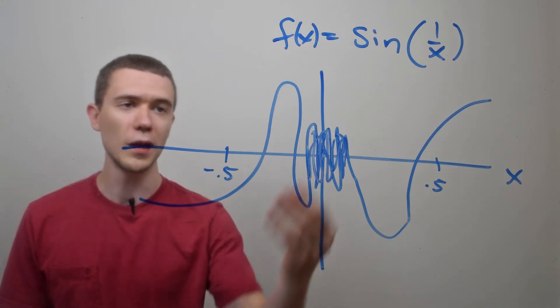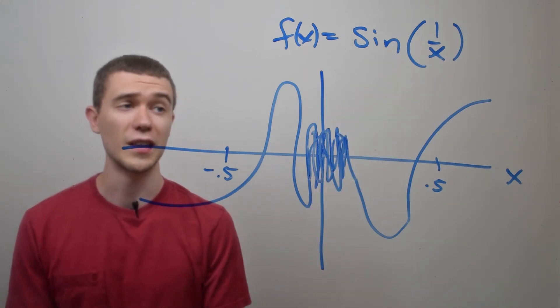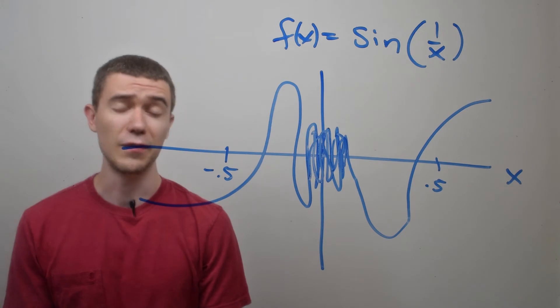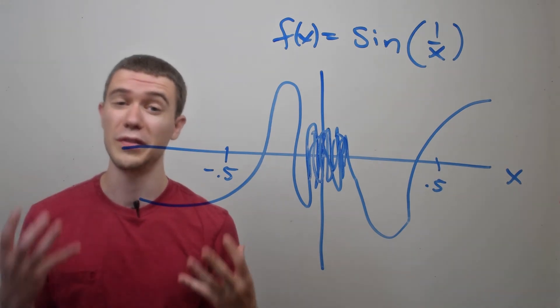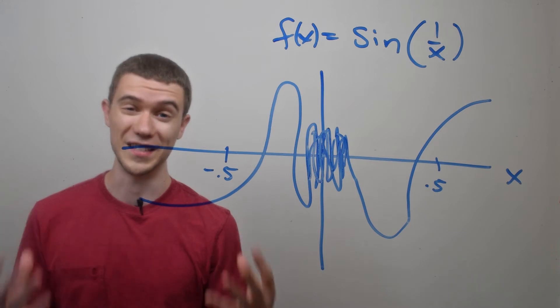You should know just by looking at the function sine of 1 over x, if you were to plug in 0 into that function, it wouldn't be very good because you'd be dividing by 0. So you know that there's some sort of discontinuity going on here.